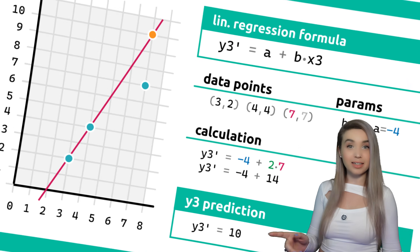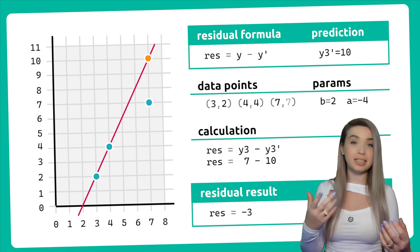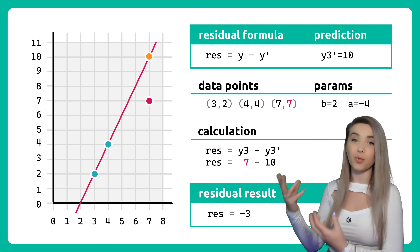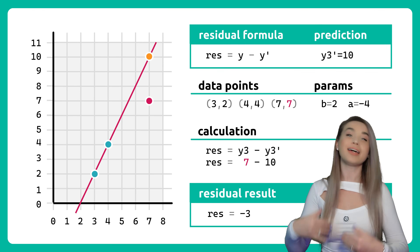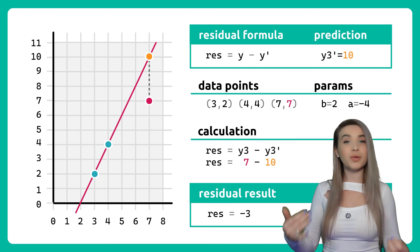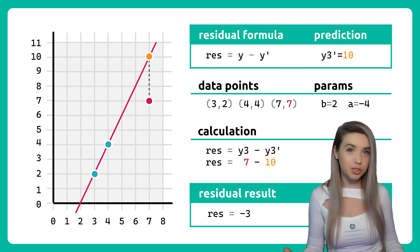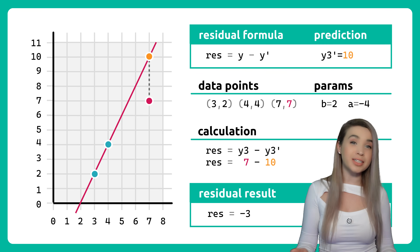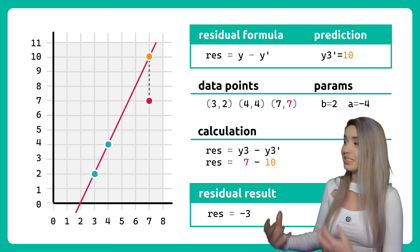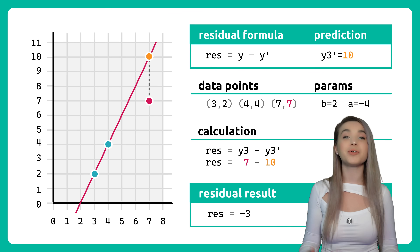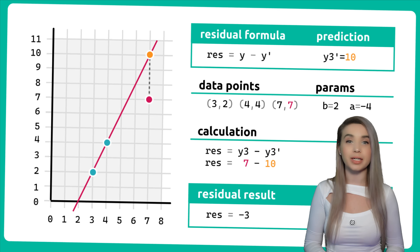Then we will calculate the difference between the actual y3 and the predicted y3 — a value that we call residual. In our case, the residual is 7 minus 10, which is of course minus 3.